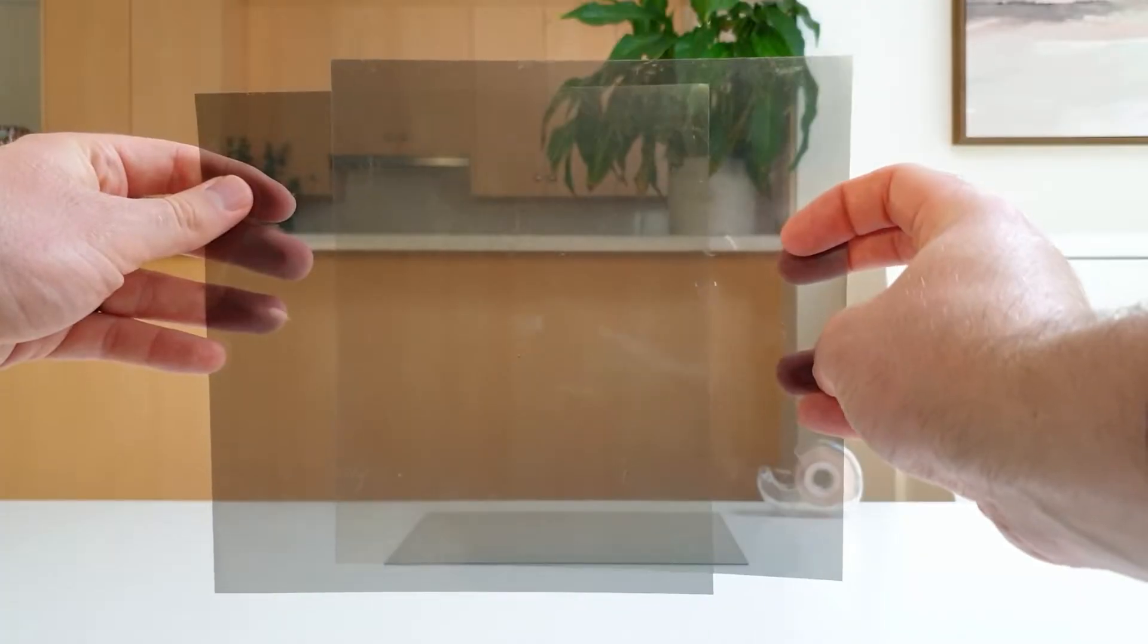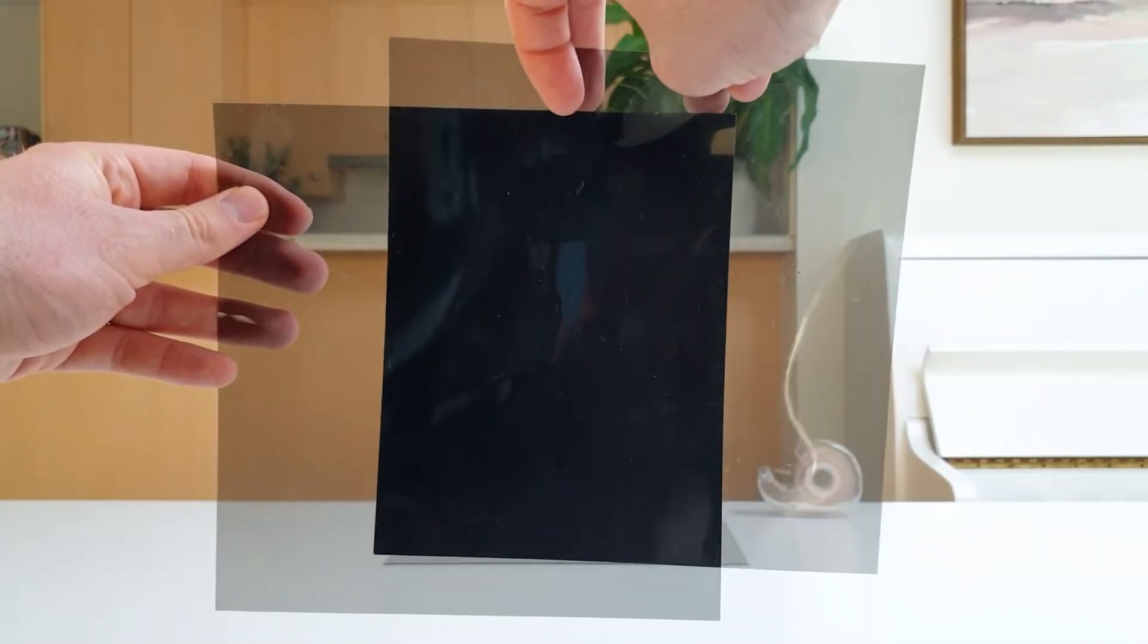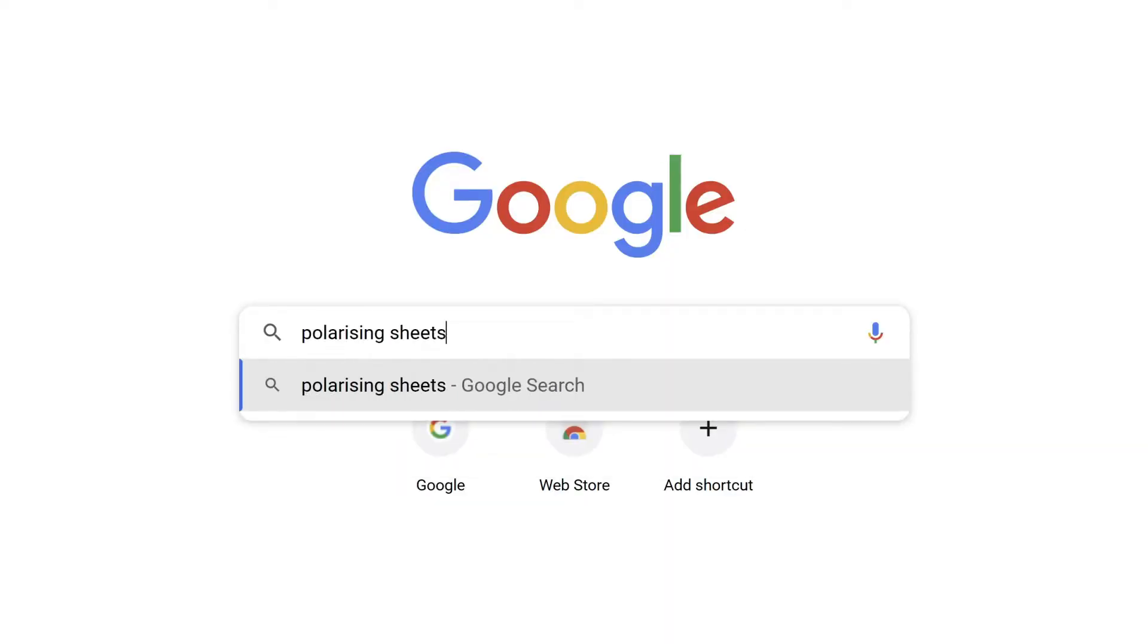The polarizers are also a bit hard to find. You can buy them from stores that sell teaching supplies or online by searching for polarizing sheets. Now that we have all the items, let's do three tests.